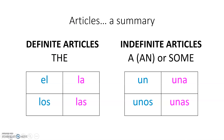So, a little summary for you — articles in Spanish. Definite articles are the words for 'the' and there are four of them: el, la, los, las — all meaning 'the.' Indefinite articles are the words for 'a,' 'an,' or 'some': un, una, unos, unas. Try to memorise that little pattern and keep your Spanish nice and accurate going forward with those lovely articles.